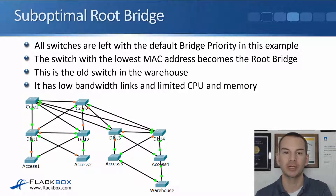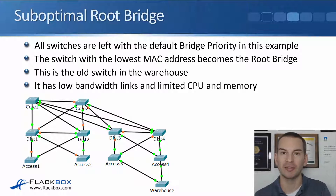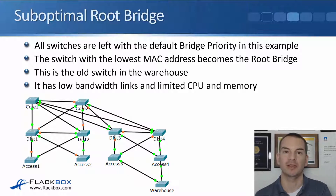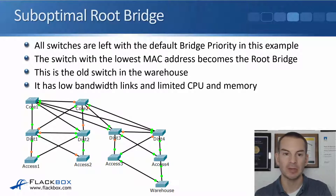So that is likely to give you suboptimal root bridge selection. In our example here, all switches have been left with the default bridge priority. And you'd be surprised at how often this does actually happen in production networks, because spanning tree works just fine straight out of the box. And in a lot of networks, the administrators don't touch it at all — they just leave it as is, and that can lead to the problem that you see here.